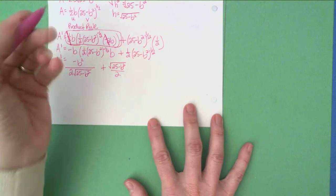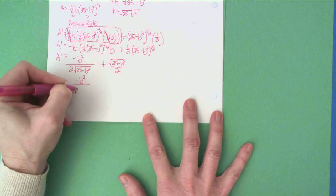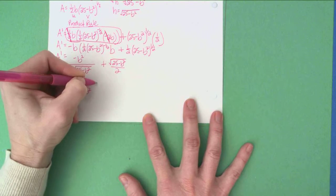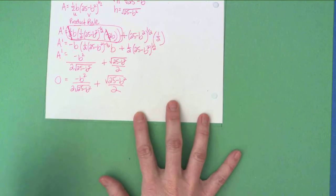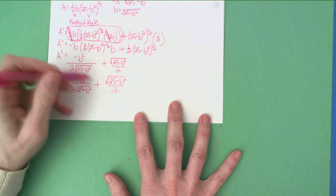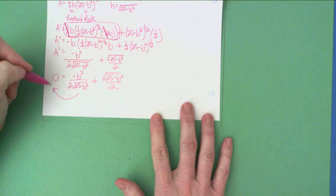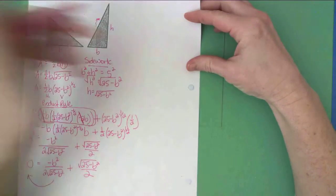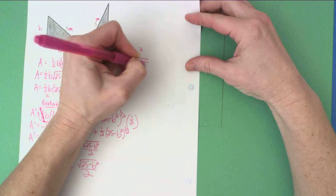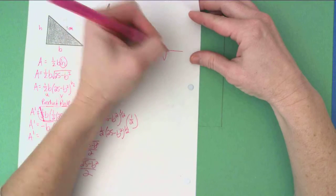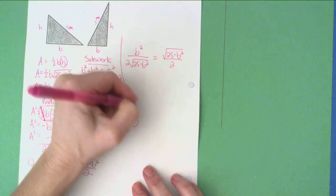Now I set this equal to zero: 0 equals negative b squared over 2 times the square root of 25 minus b squared, plus the square root of 25 minus b squared all over 2. To solve, I move the first term to the other side by adding it to both sides, which makes it positive: b squared over 2 times the square root of 25 minus b squared equals the square root of 25 minus b squared all over 2.